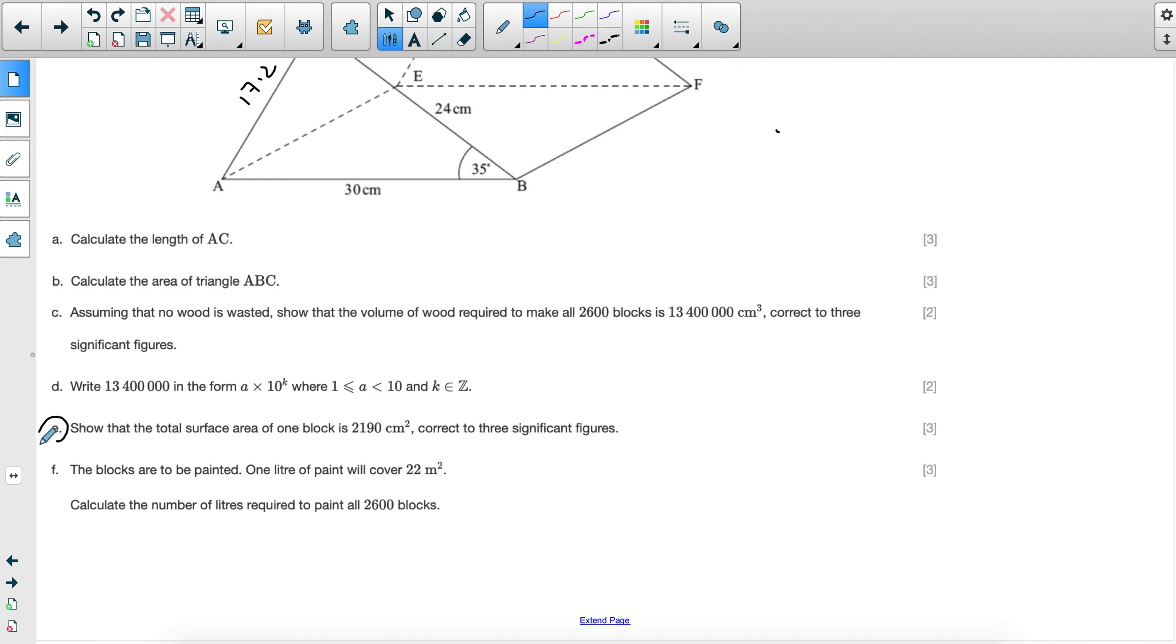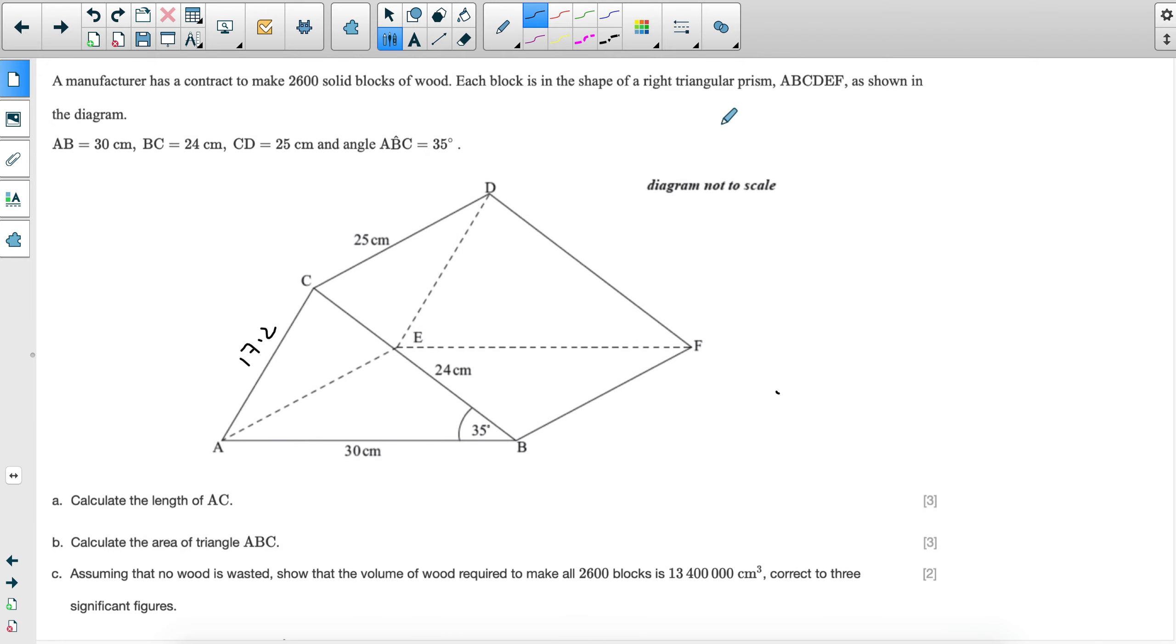For part E, show that the total surface area of one block is 2,190 centimeters squared, correct to three significant figures. Total surface area is you adding all the areas. Students surprisingly lose marks in this, even though you can get really easy marks by doing the simplest calculations. So don't leave this blank. Try as much as you can. And if you get to the final answer, great. If not, at least you've scored a few marks for yourself.